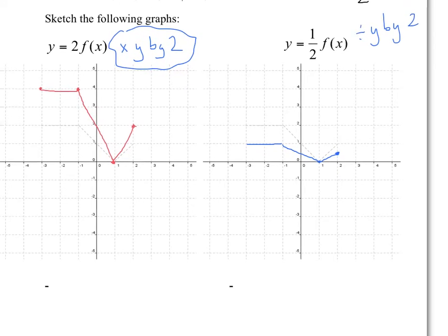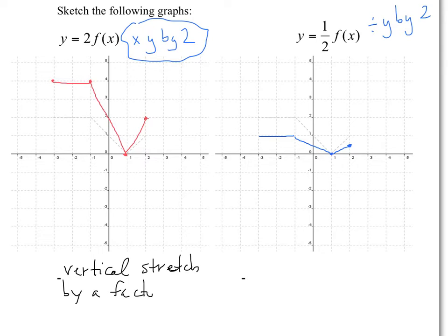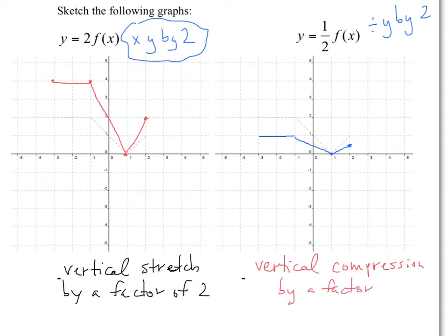Just to use some vocabulary: we call this a vertical stretch by a factor of 2. And as you can maybe guess, this would be a vertical compression — as you kind of squeeze it all together — so it's a compression by a factor of 2. When you say a factor, it means a multiplication. So by saying compression, you're dividing.